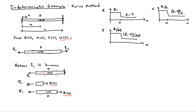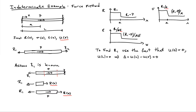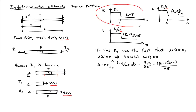To find R1, we use the fact that the bar is built in at both ends, so the displacement at x = 0 and x = L are both zero — meaning the overall change in length δ is zero. The change in length is the integral from 0 to L of the internal force divided by AE. Substituting our expression for R(x) and setting δ = 0 gives an equation in R1, which we can solve. Using this kinematic information determines R1.